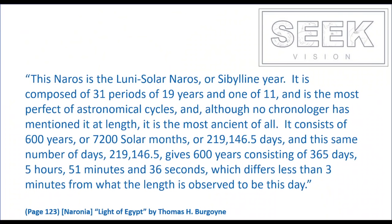He said: 'This Naros is the luni-solar Naros or Sibylline year. It is composed of 31 periods of 19 years and one of 11, and is the most perfect of astronomical cycles. And although no chronologer has mentioned it at length, it is the most ancient of all. It consists of 600 years, or 7,200 solar months, or 219,146 and a half days. And this same number of days — 219,146 and a half — gives 600 years consisting of 365 days, 5 hours, 51 minutes and 36 seconds, which differs less than three minutes from what the length is observed to be this day.' That is from The Light of Egypt.